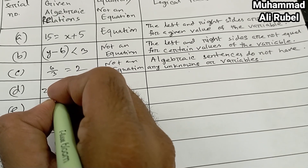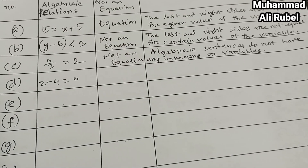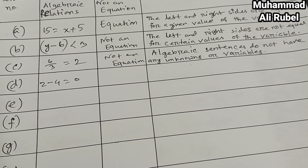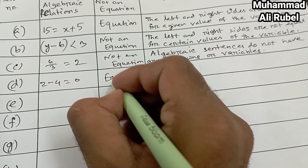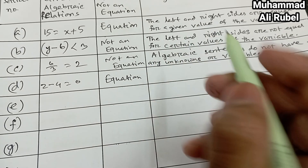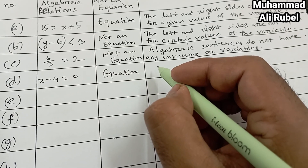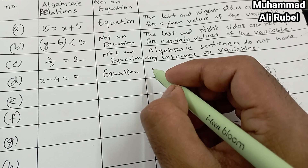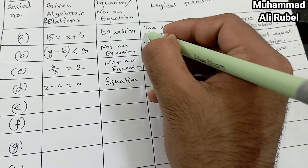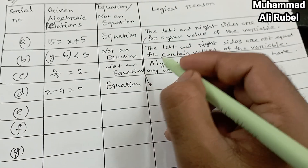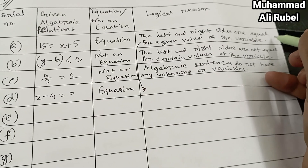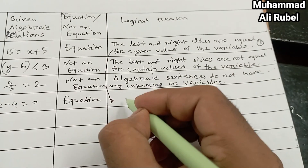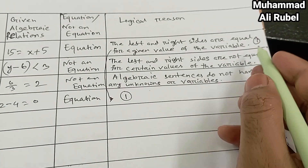Item d: z minus z minus 4 equal 0.522. It is an equation. Logical reason: the left and right sides are equal for a given value of the variable.